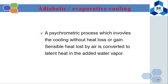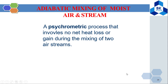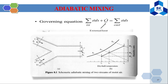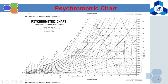Adiabatic or evaporative cooling is a psychrometric process involving cooling without net heat loss or gain — the sensible heat lost by the air is converted to latent heat in the added water vapor. Adiabatic mixing of moist air streams is a psychrometric process involving no net heat loss or gain during the mixing of two air streams, governed by the equation: total (ṁh) + q̇ = total outlet (ṁh), where q̇ is the external heat added to the mixing process.